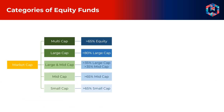Looking at the categories of equity funds, per SEBI's definition of market capitalization, equity mutual funds could be split into large cap, large and mid cap, mid cap, and small cap funds. A multi cap fund invests across market capitalizations — that is, it would have a mix of large cap stocks, mid cap stocks, as well as small cap stocks in its portfolio.